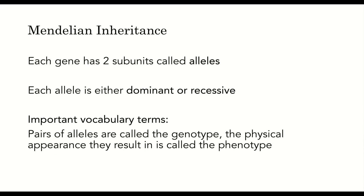Mendelian inheritance is the most simple and straightforward form of inheritance, or the transmission of genetic information from one generation to the next. In Mendelian inheritance, which only applies to some traits, each gene has two subunits called alleles. Each allele is either dominant or recessive. Pairs of alleles are called the genotype. The physical appearance they result in is called the phenotype.